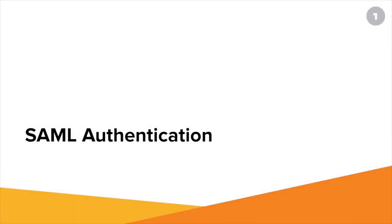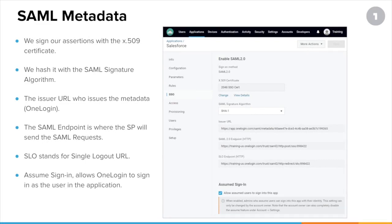One of the most popular single sign-on authentication methods is SAML. Most of the steps to configure SAML are actually done on the application's end — documentation is your friend, either OneLogin's documentation or the application's documentation. The SSO tab information in OneLogin is really used for reference purposes; you need that information to complete the configuration steps on the application's end.